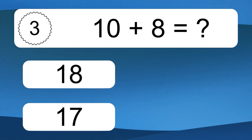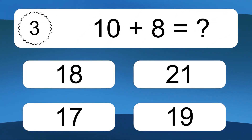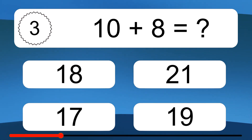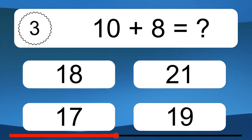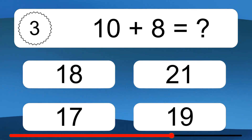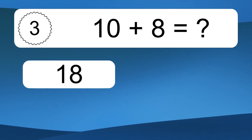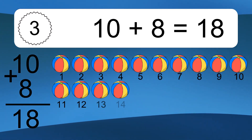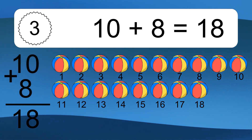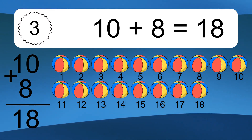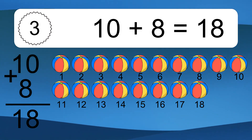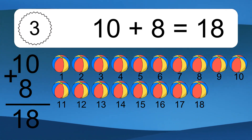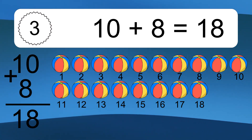10 plus 8 equals what? 10 plus 8 equals 18. Let's count it. 1, 2, 3, 4, 5, 6, 7, 8, 9, 10, 11, 12, 13, 14, 15, 16, 17, 18.